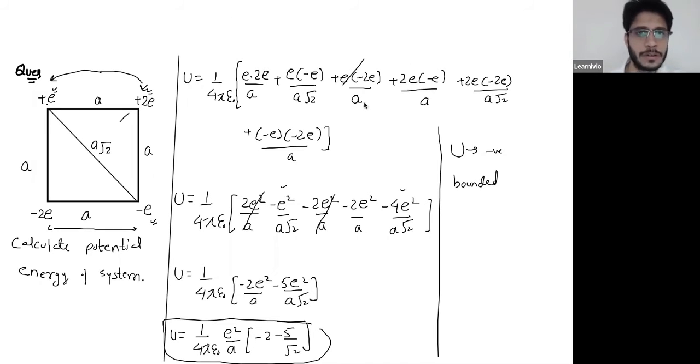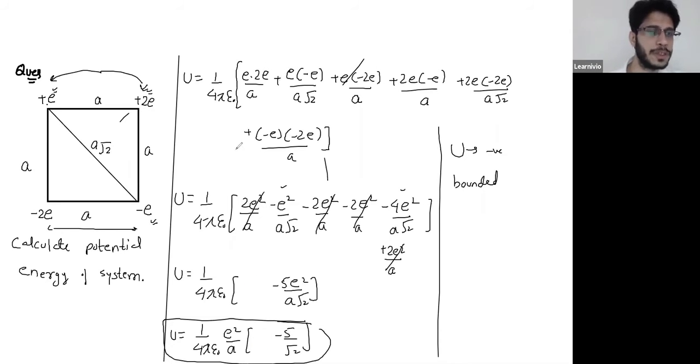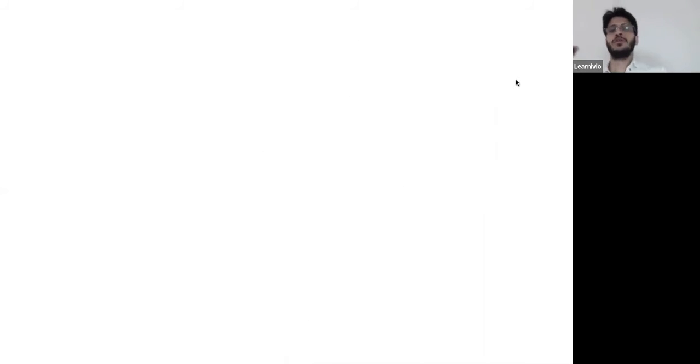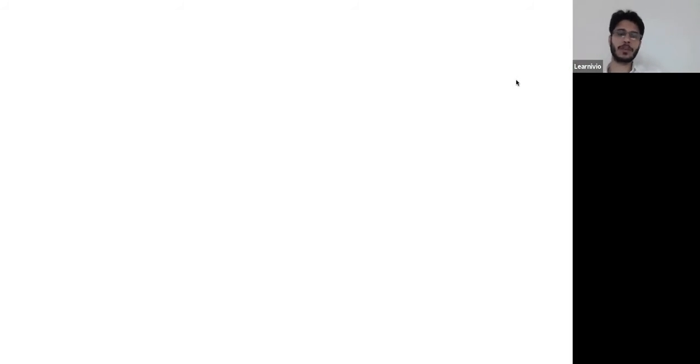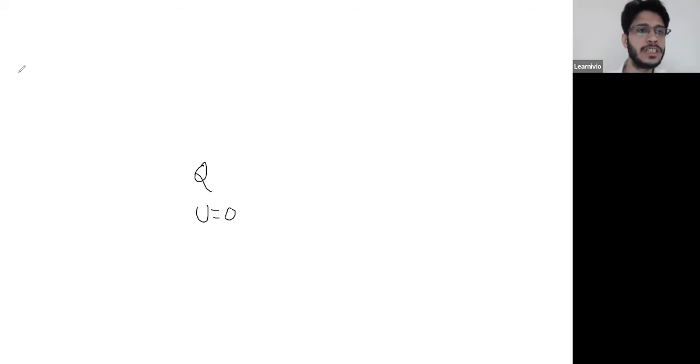Since the potential energy is negative, the system is a bounded system. Now, what if you have just a single point charge with no field? There's no interaction, so potential energy is zero. For interaction you need at least two charges or a charge and a field. With just one charge and no field, potential energy is zero.